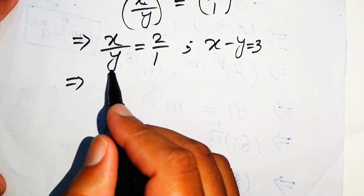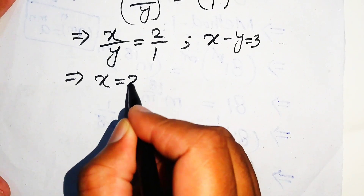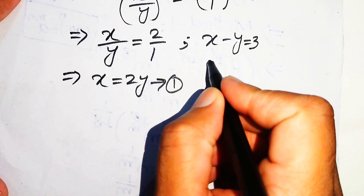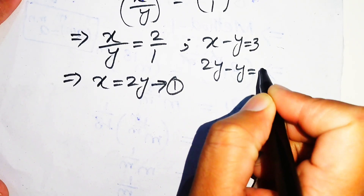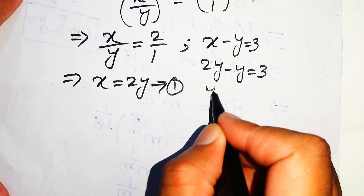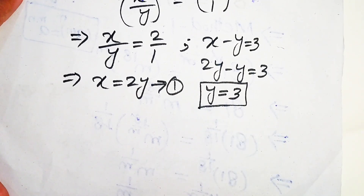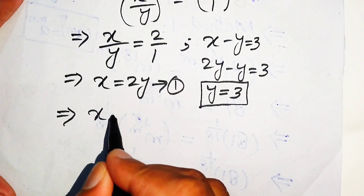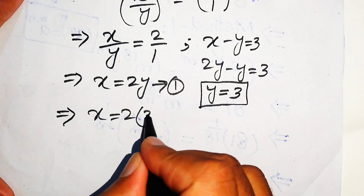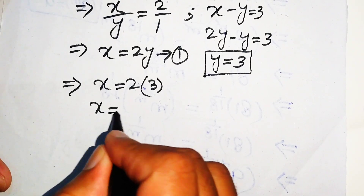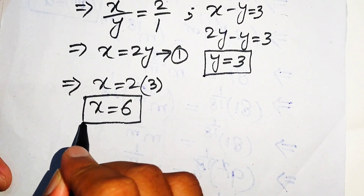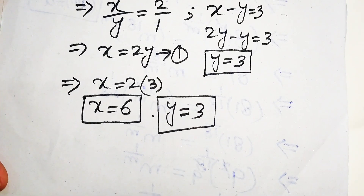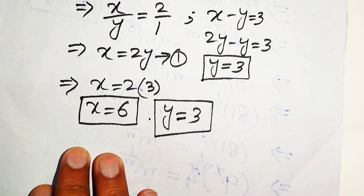From x over y equals 2, moving y gives x equals 2y, which we call equation 1. Substituting into x minus y equals 3 gives 2y minus y equals 3, so y equals 3, which is an integer. Substituting y equals 3 into equation 1 gives x equals 2 times 3, so x equals 6. We have the integer solution x equals 6 and y equals 3.